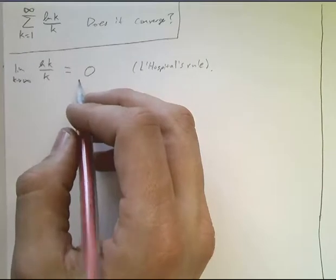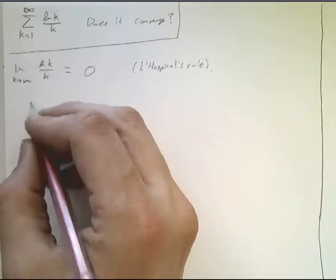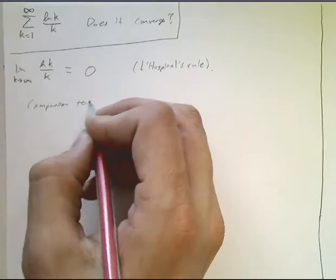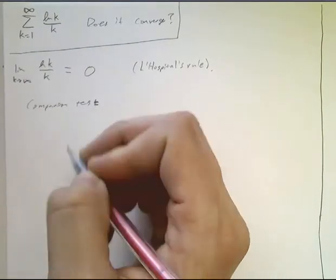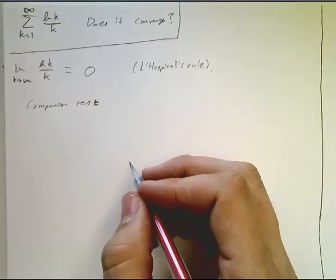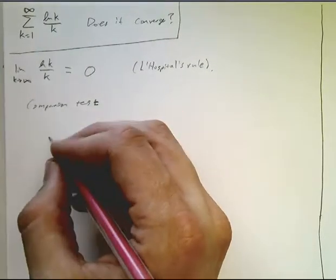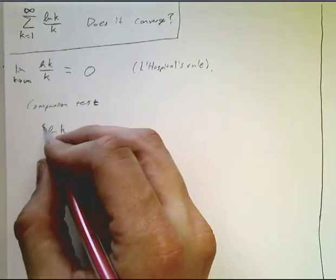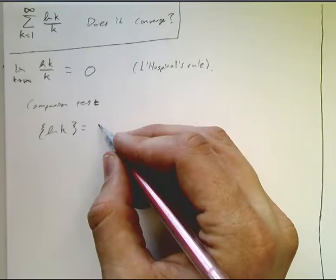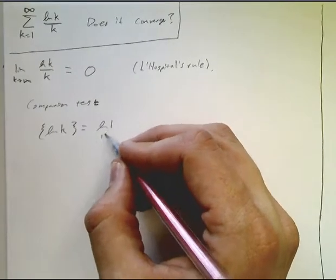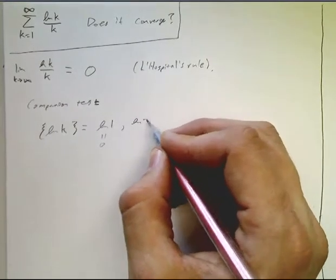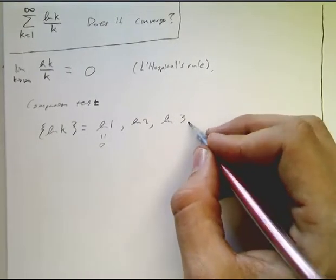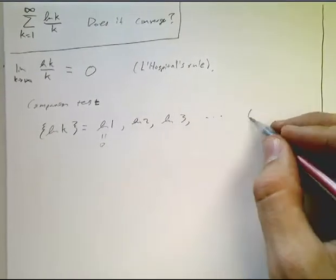Okay, I'm going to use the comparison test. Because if I look at natural log K, this goes natural log 1, which equals zero, natural log 2, natural log 3, etc. This is growing.